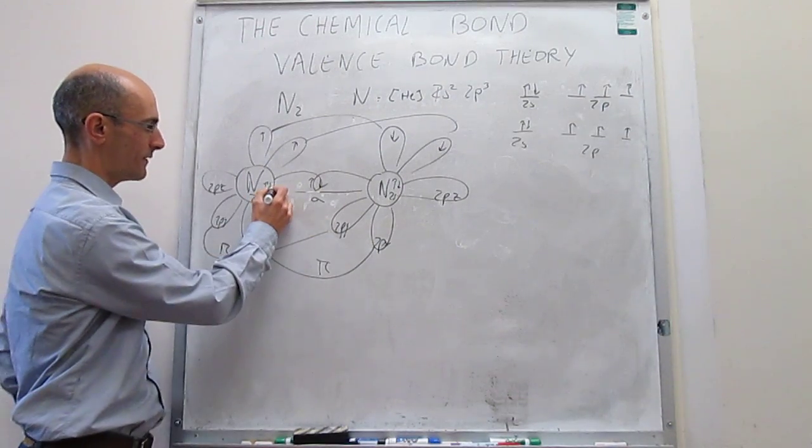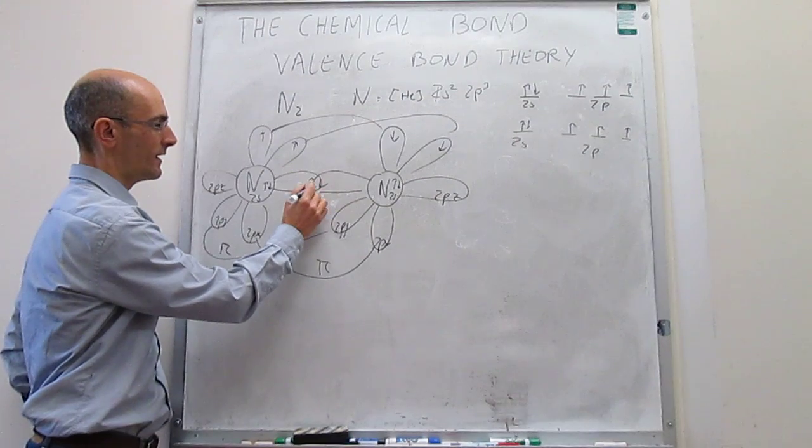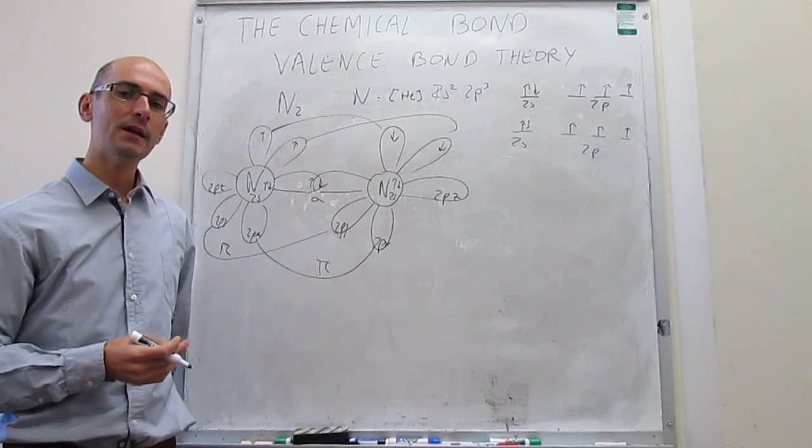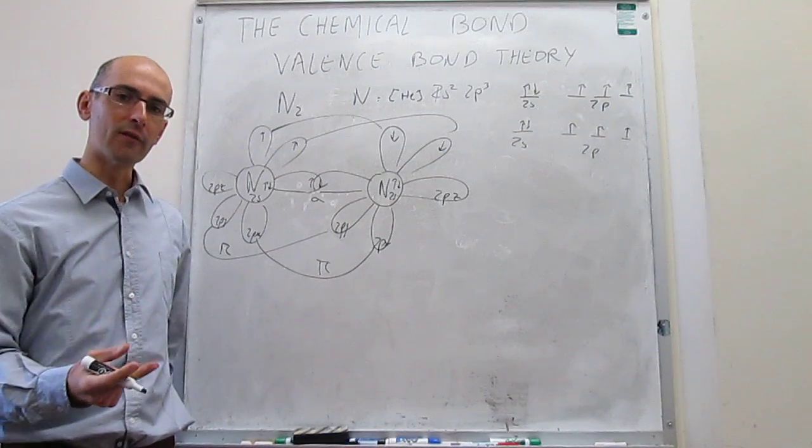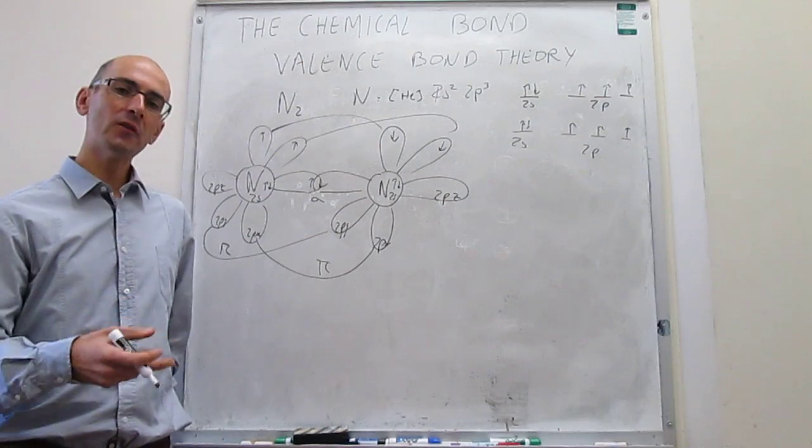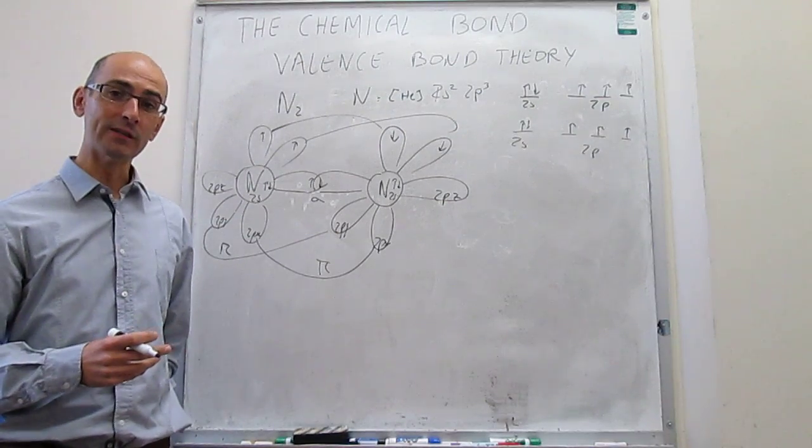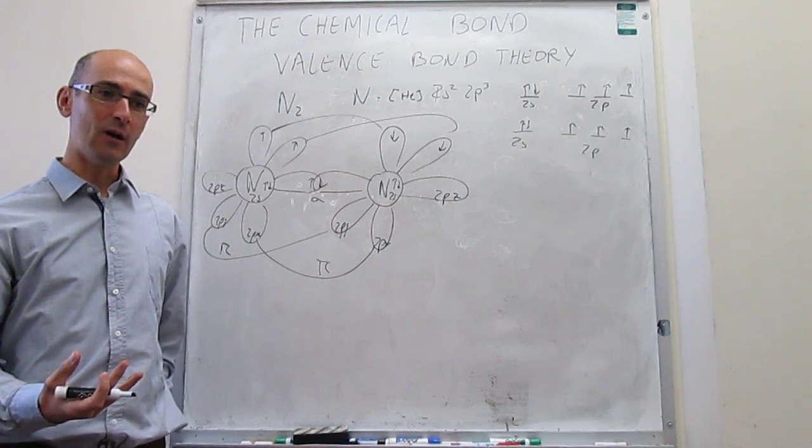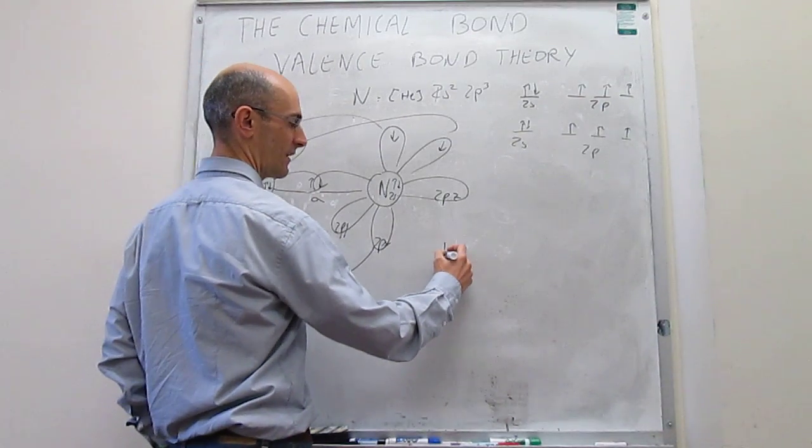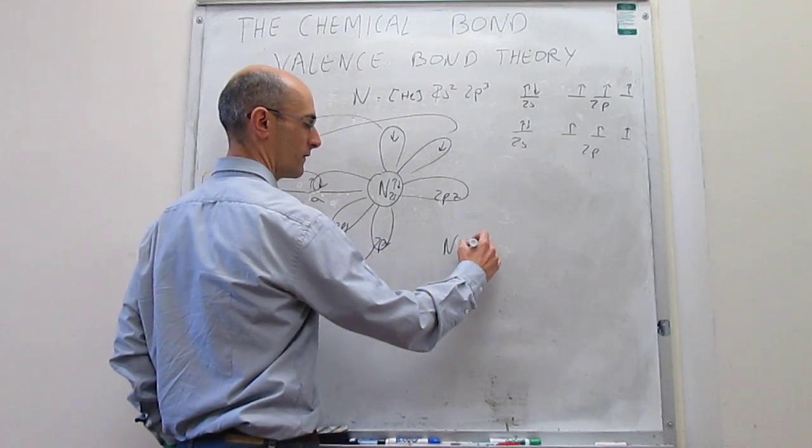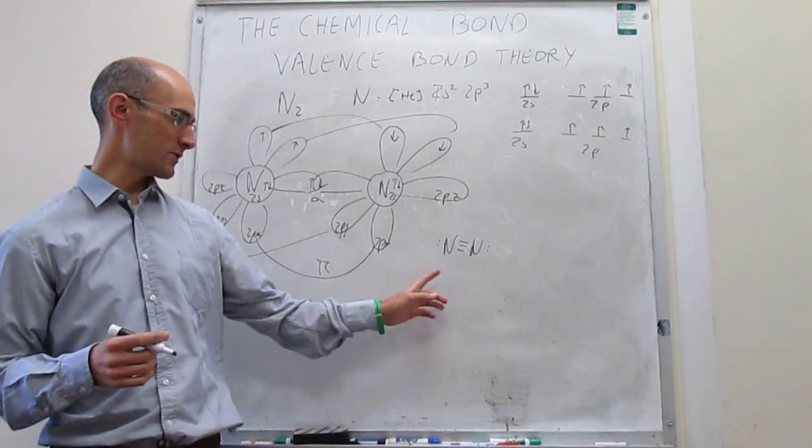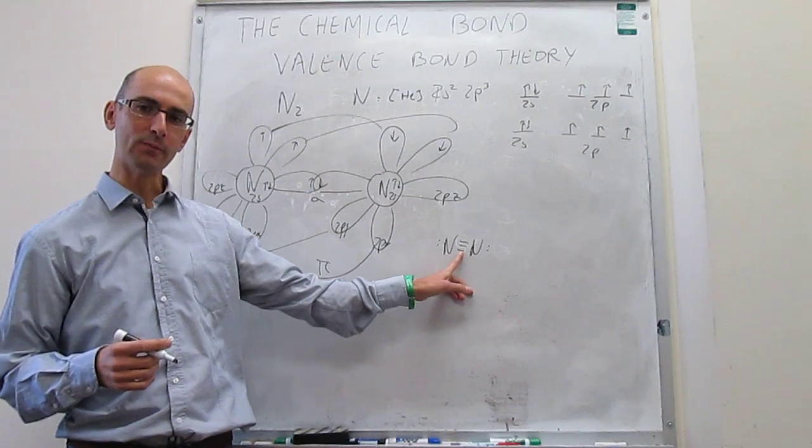This will be the valence bond theory diagram for the nitrogen molecule. What we see is that this molecule, the bond between the two atoms, is caused by three overlaps: one sigma and two pi overlaps. In other words, we can say that this molecule has a triple bond, one sigma bond and two pi bonds. I noticed that that agrees quite well with some other theories of bonding, like Lewis dot structures, where actually you see now that triple bond.